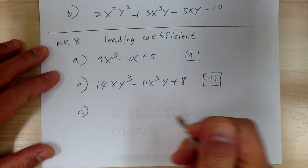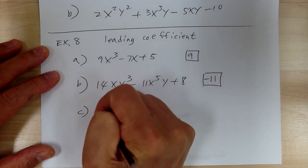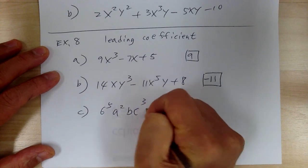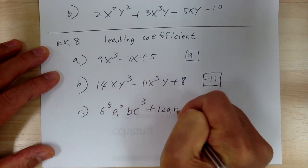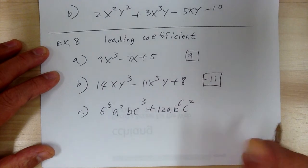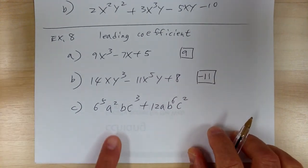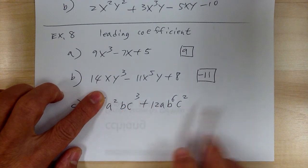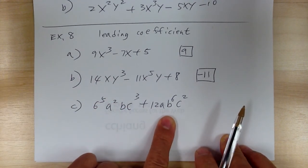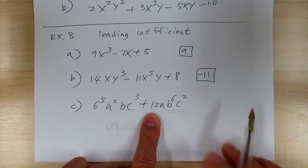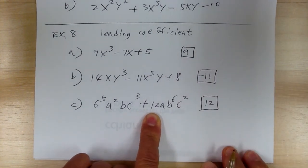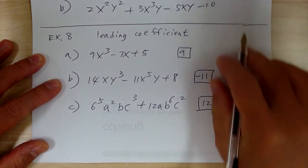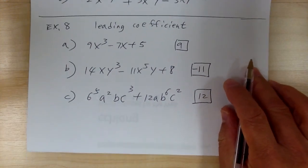C: 6⁵A²BC³ plus 12AB⁶C². This number doesn't count. The first term is 6 degrees, the second is 9 degrees, so the second is the higher degree and that is the leading term. So your leading coefficient would be 12. And that's it — let's go and do some practice.